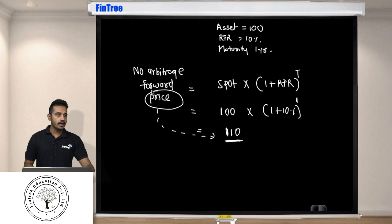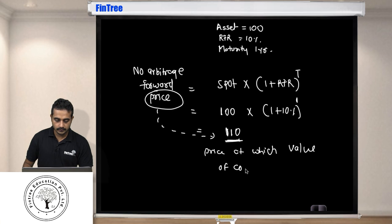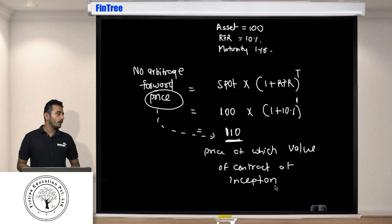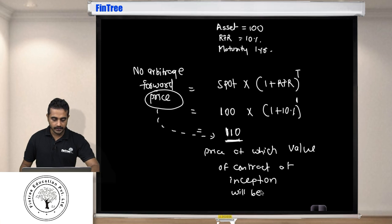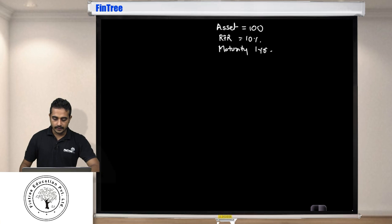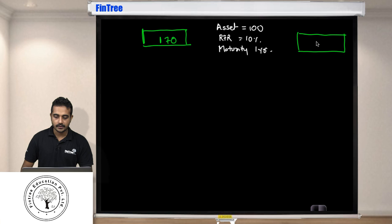This is your no arbitrage forward price. That means when you sign the contract at time zero, this is the price at which value of the contract at inception will be zero. You set the price in such a way that you want to have zero value at the beginning of the contract.